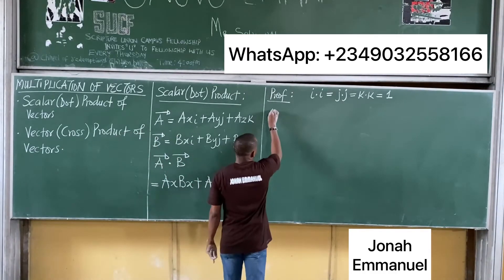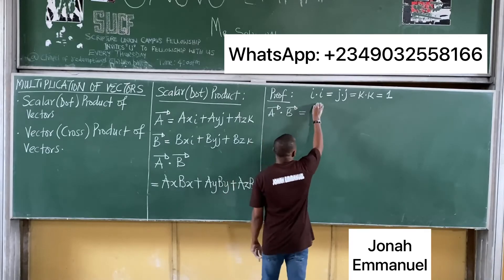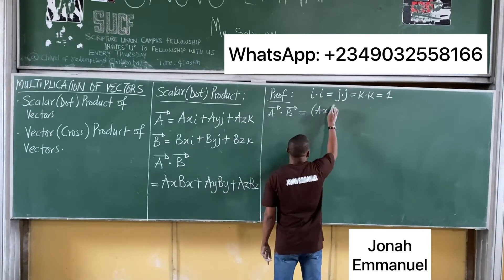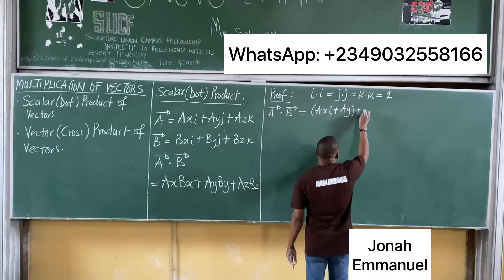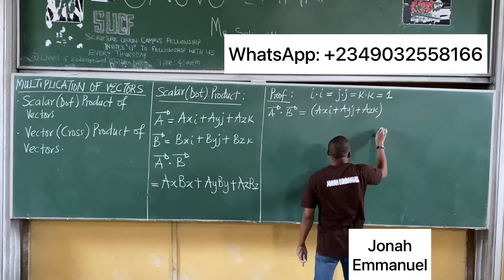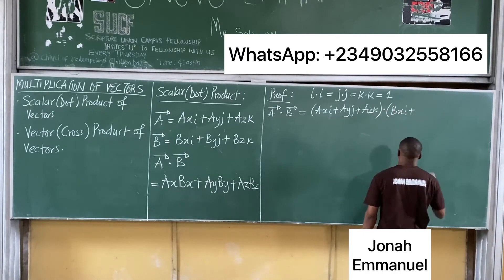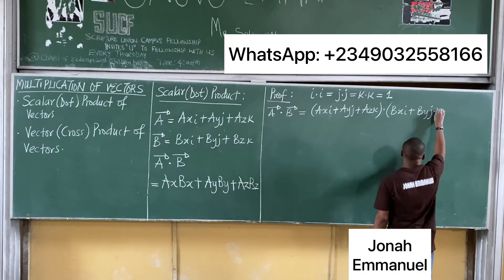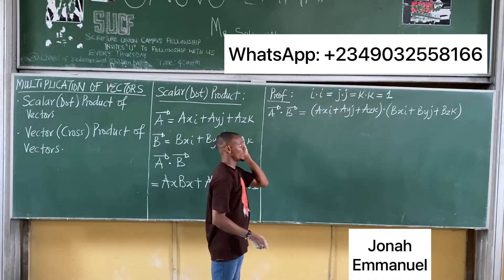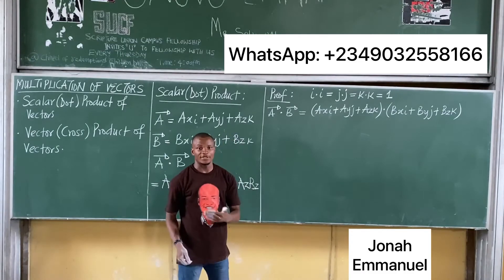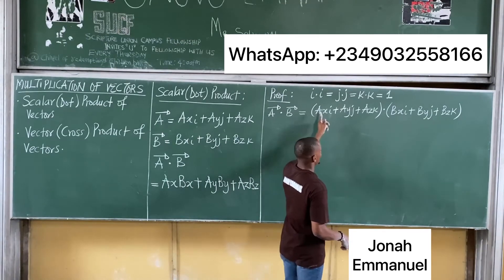So let's prove this. Looking at a·b in a more expanded sense, a·b equals (ax·i plus ay·j plus az·k) dotted with (bx·i plus by·j plus bz·k). We said i·i equals j·j equals k·k equals 1, and all other dot products equal 0. Now I'll multiply everything through.